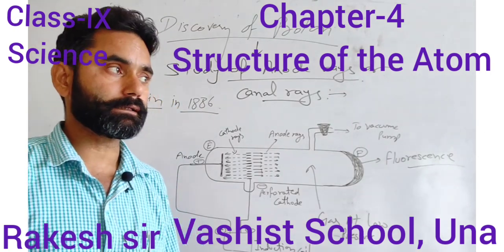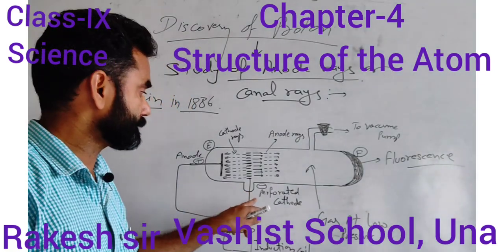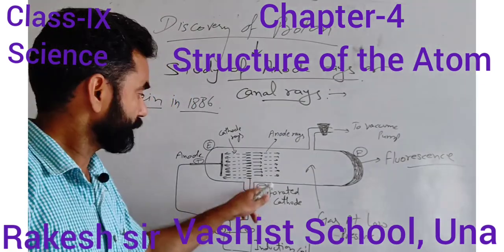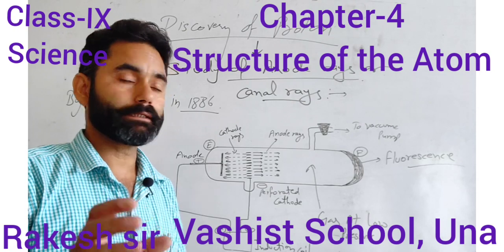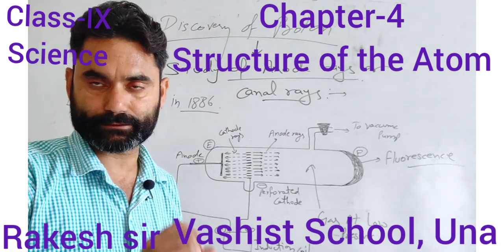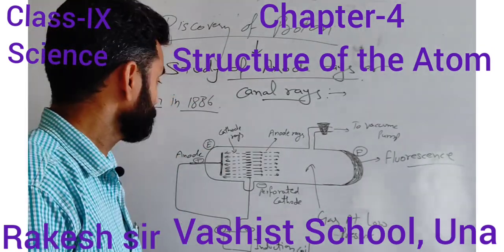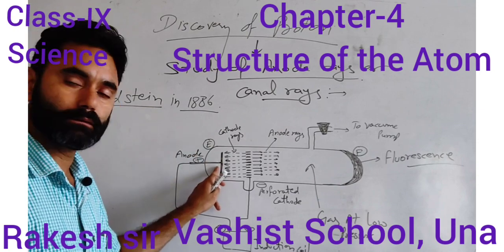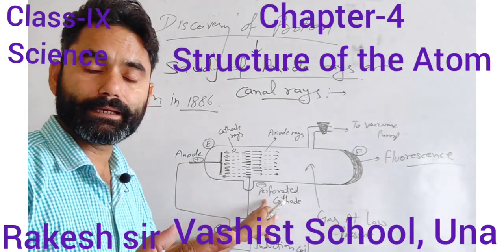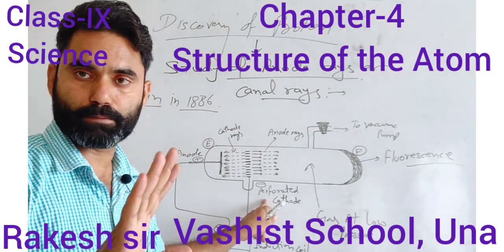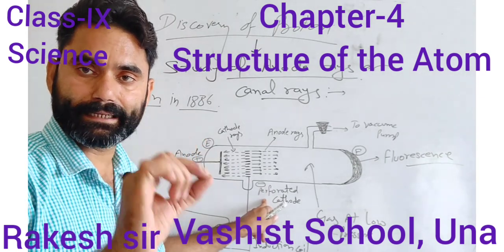Goldstein made some modifications in the discharge tube. He simply changed the cathode with a perforated cathode. Perforated means a plate having holes in it. He took a metal plate as an electrode, but used it as a perforated cathode — a simple plate but with holes in it.